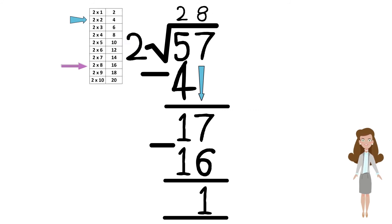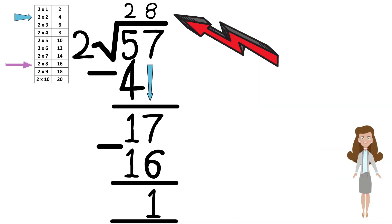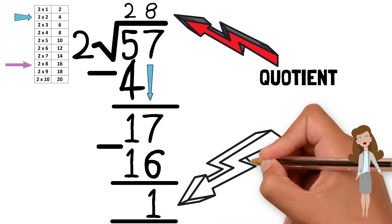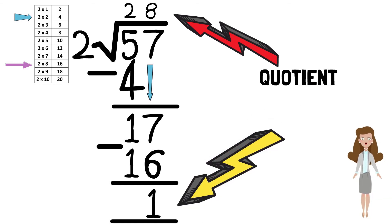Since we don't have any more digits left, that is the final answer. 28 is the quotient and 1 is the remainder.